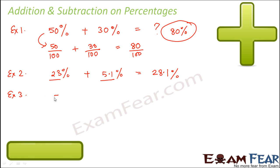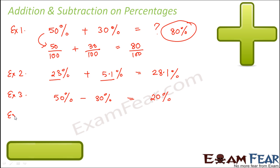The same is true for subtraction. For example, 50% minus 30% — 50 minus 30 is 20, so this would be 20%. Similarly, 80% minus 30% would be 50%. Basically, addition and subtraction on percentages are as simple as addition and subtraction on whole numbers or any other numbers.